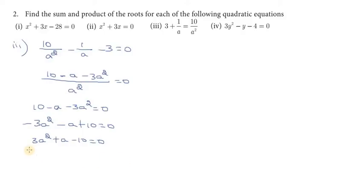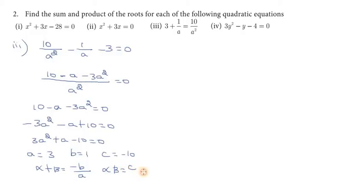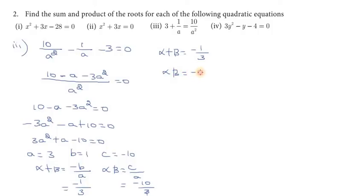So a value is 3, b value is 1, c value is minus 10. In this formula we substitute: alpha plus beta is equal to minus b by a, and alpha into beta is equal to c by a. So alpha plus beta is minus 1 by 3, and alpha into beta is minus 10 by 3. So sum of the value is minus 1 by 3 and product of the value is minus 10 by 3.